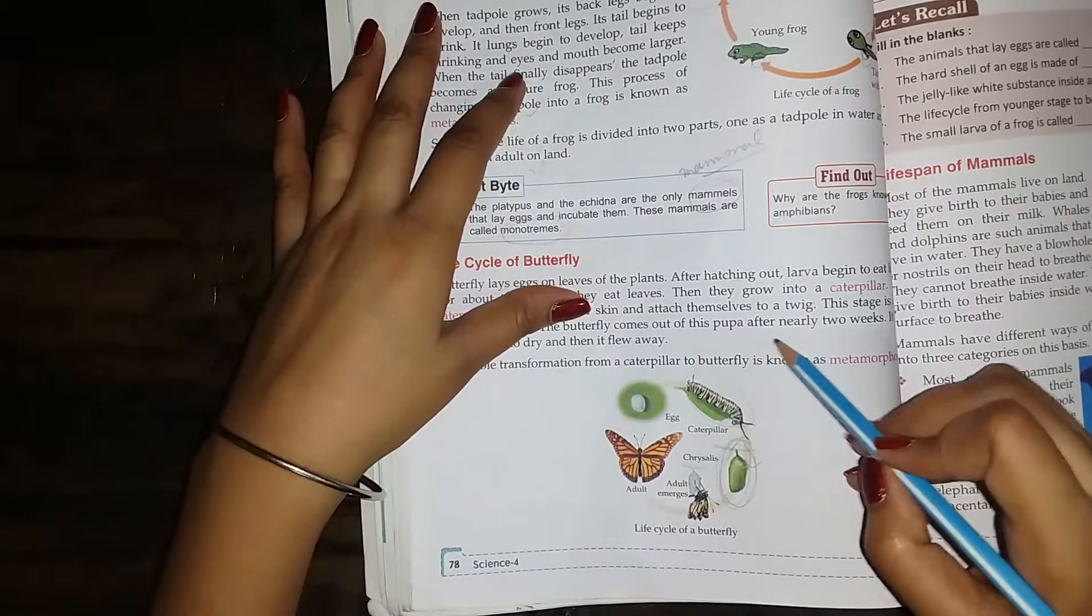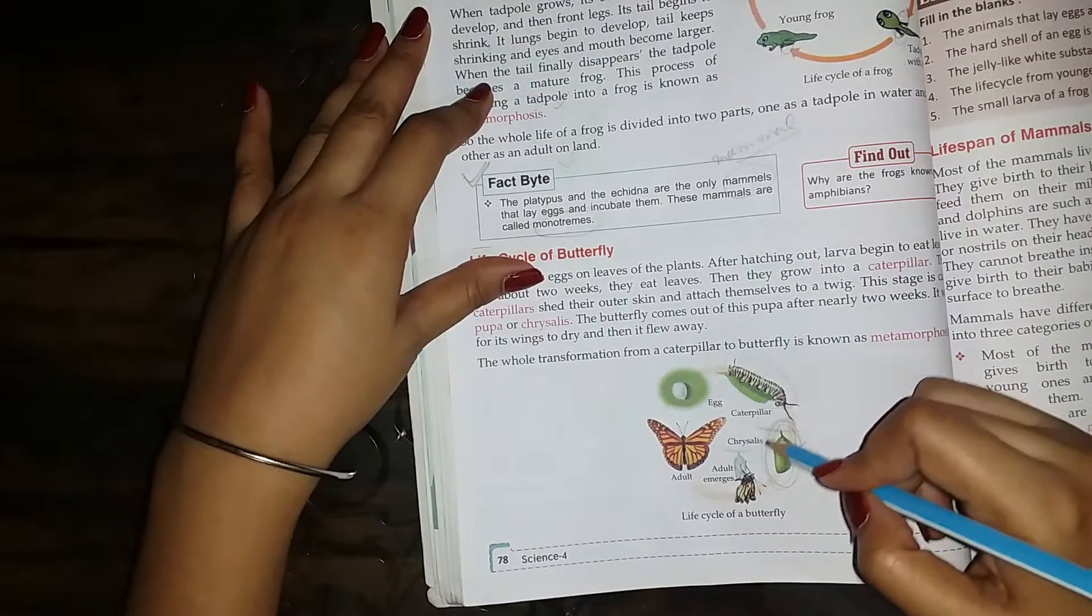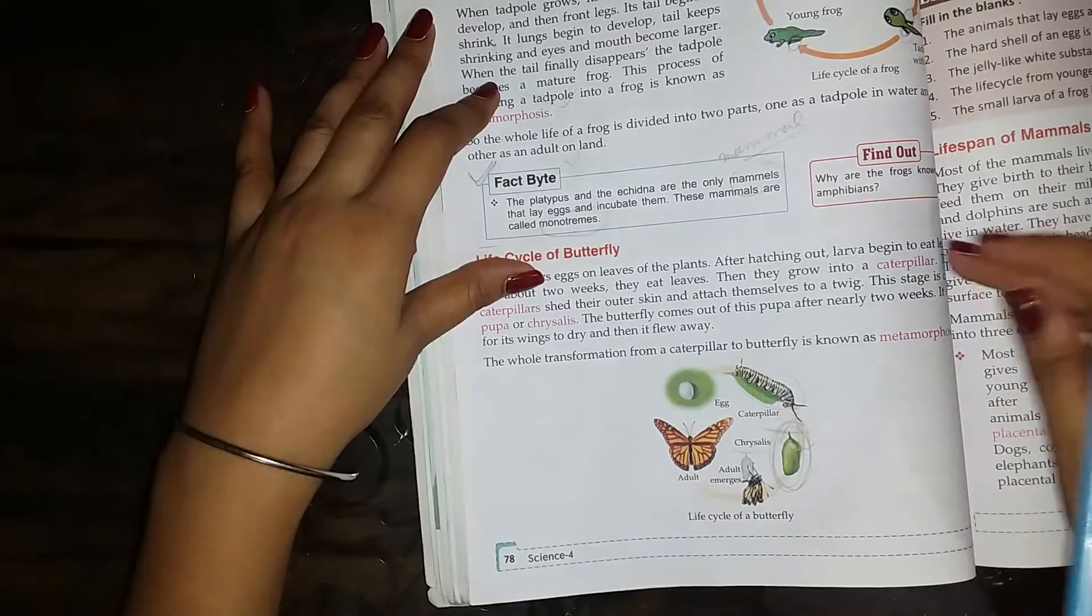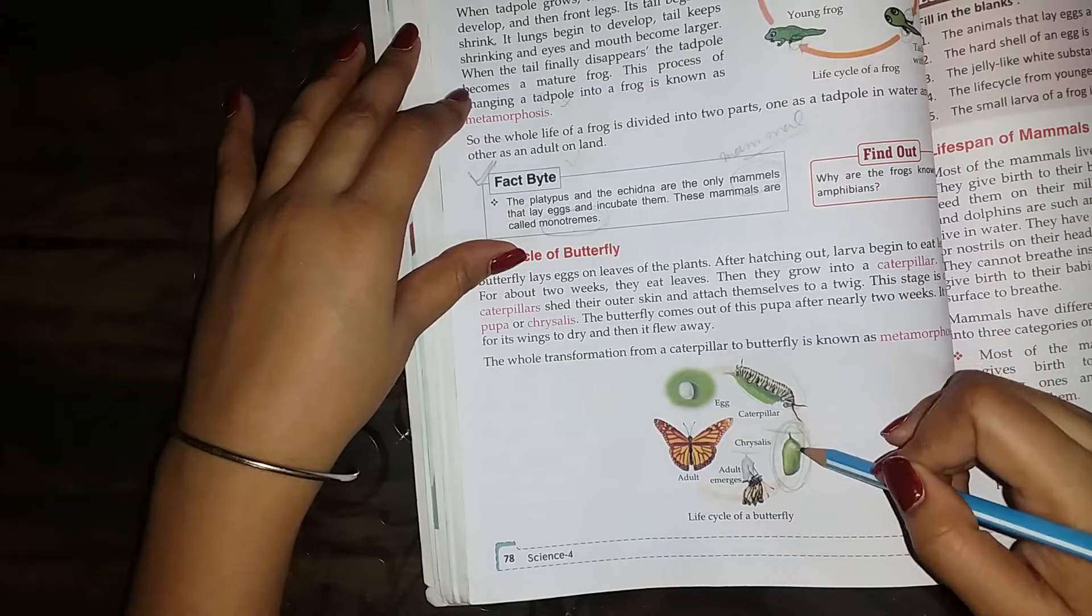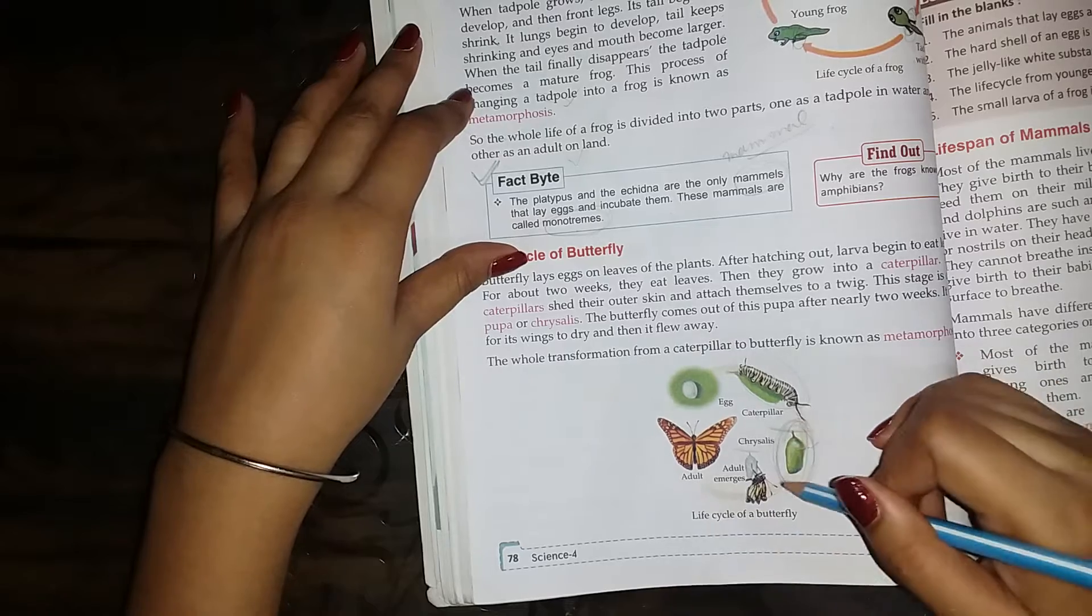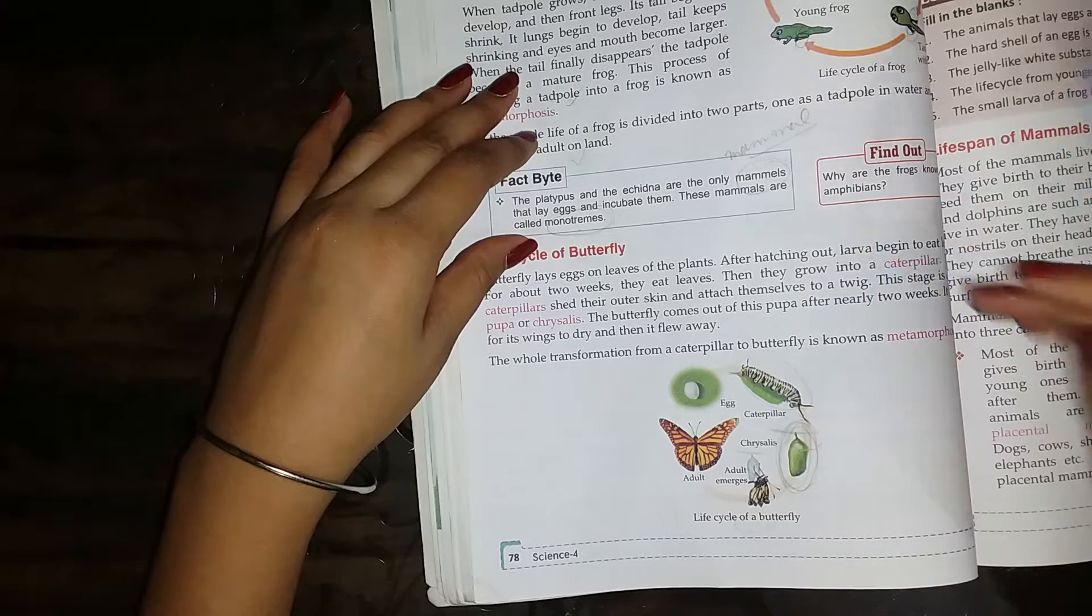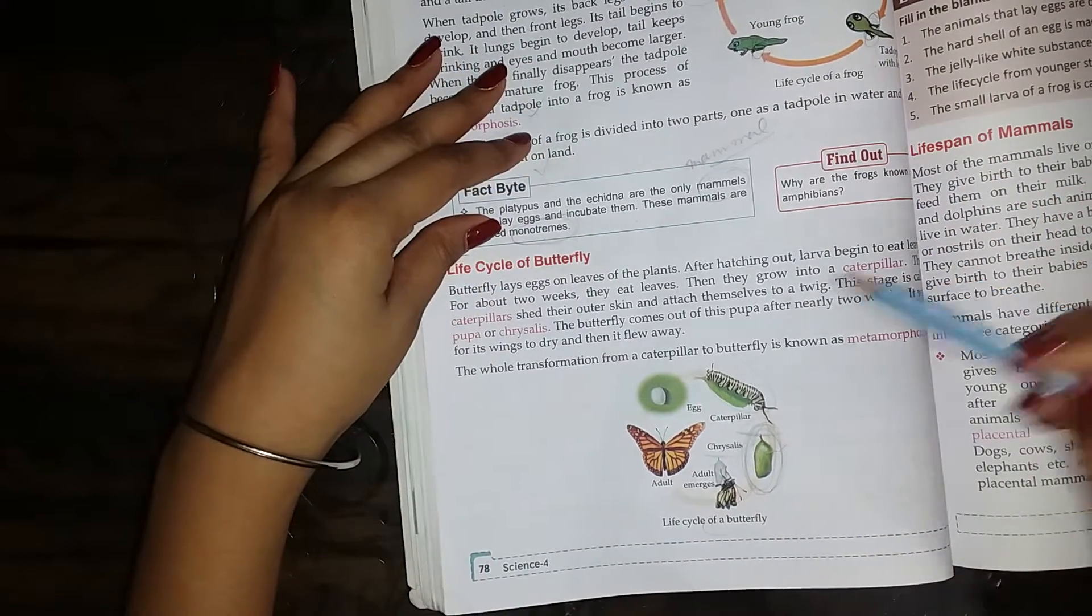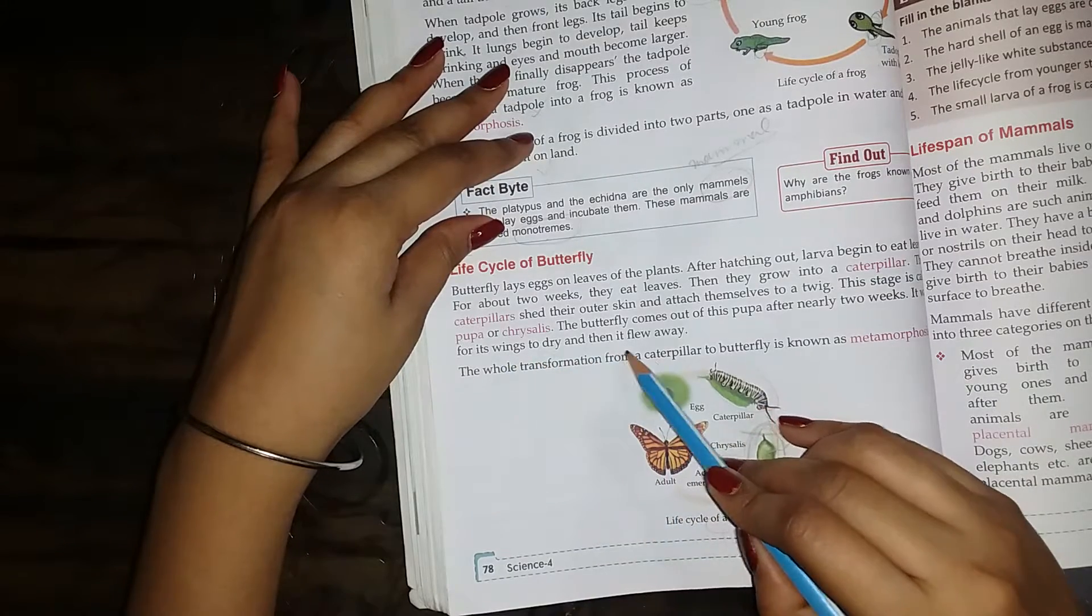The butterfly comes out of pupa after nearly 2 weeks. It waits for its wings to dry and then it flies away.